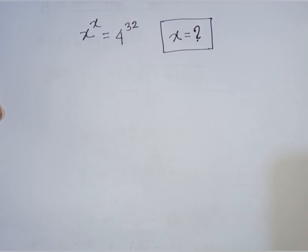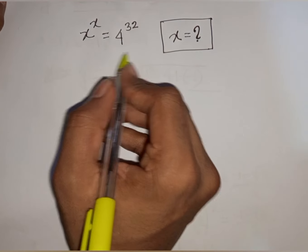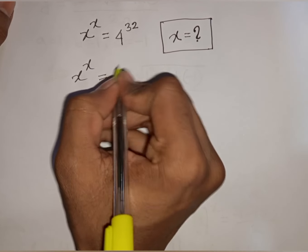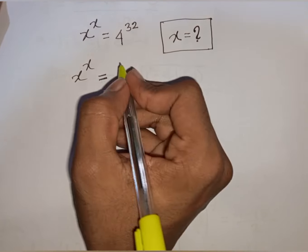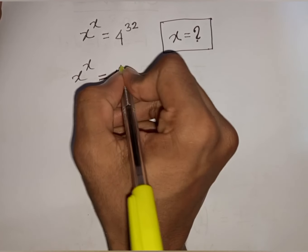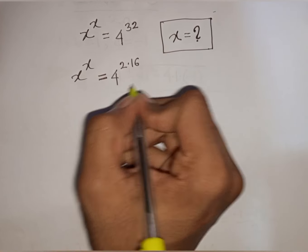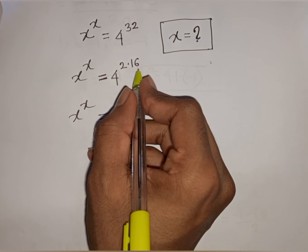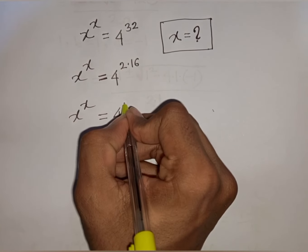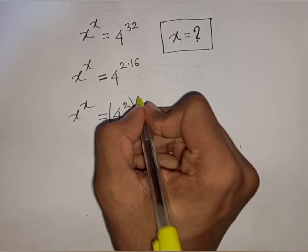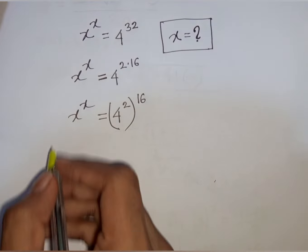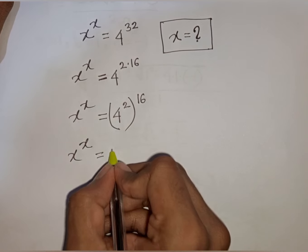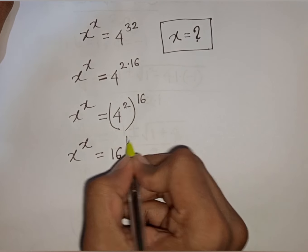How to solve x power x is equal to 4 power of 32. Find the value of x. We have x power x is equal to 4 power of 32. Now, 4 power of 32 can be written as 4 power of 2 times 16, which is the same as 16 power of 16.